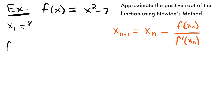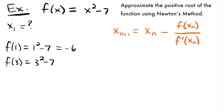I'll start by plugging in 1: f of 1 equals 1 squared minus 7, which equals 1 minus 7, giving us negative 6. So we have a negative value there. Now let's plug in a bigger number — let's say 3 — and see if we get a positive value instead. f of 3 equals 3 squared minus 7, which equals 9 minus 7, giving us 2. So we have a positive value at x equals 3.